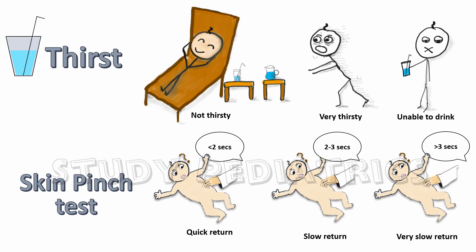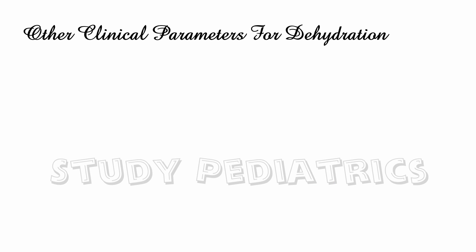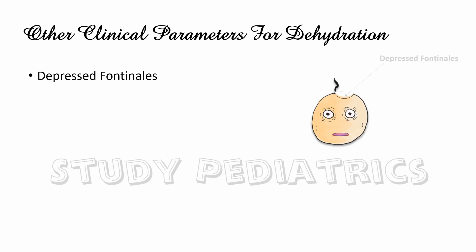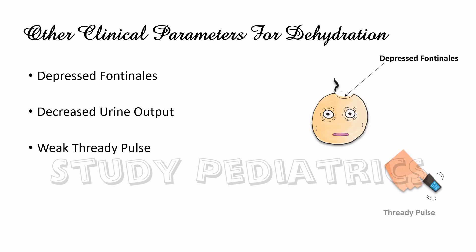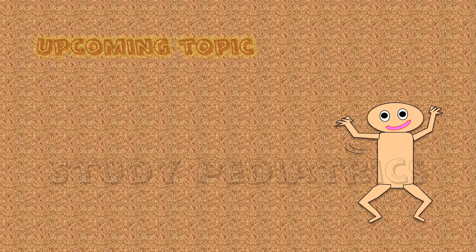With practice, one can master these observation skills. Other clinical parameters that support the diagnosis of dehydration include depressed fontanel, decreased urine output, weak thready pulse, rapid and deep breathing, and abdominal distension. Management has been made as a separate video to ensure clarity and manageable content.